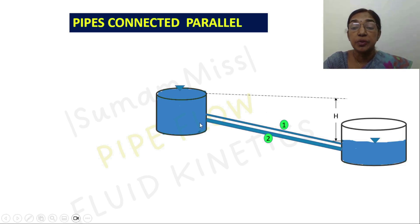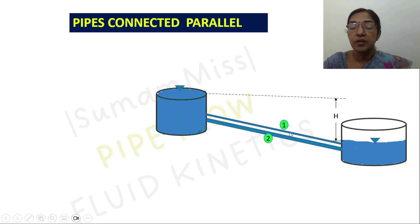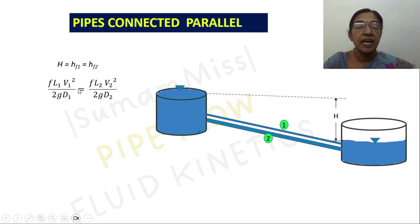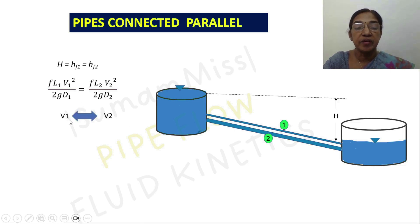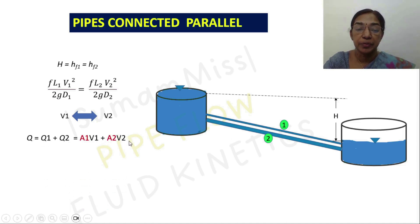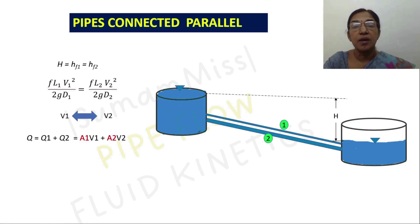Similarly, we can connect pipes in parallel to increase the discharge. Here you can see two pipes connected in parallel connecting two tanks. The difference in liquid level in the two tanks equals h. This means the head loss for pipe section 1 equals the head loss for pipe section 2 equals h. So fL1V1²/(2gD1) = fL2V2²/(2gD2). If the same material and known diameters are used, we establish a relationship between V1 and V2. The total discharge Q = Q1 + Q2 = A1V1 + A2V2. From the relationship between V1 and V2, we can express Q in terms of either velocity, then find each discharge component.